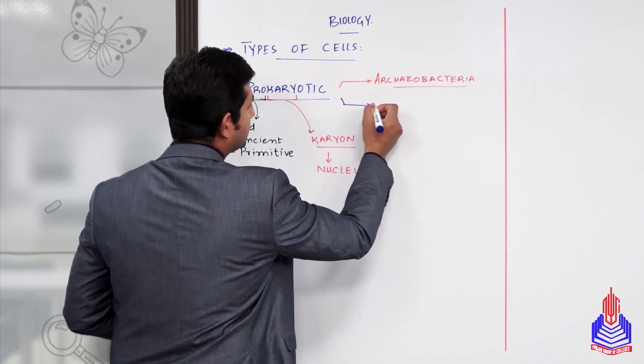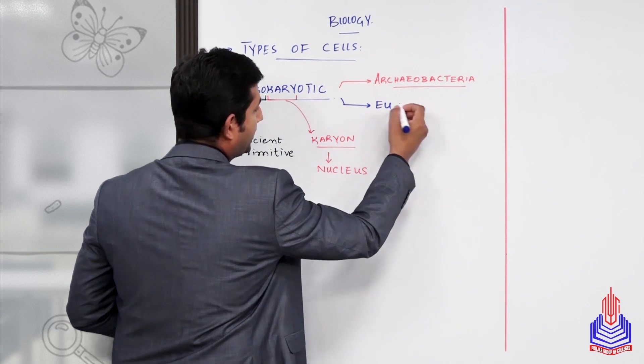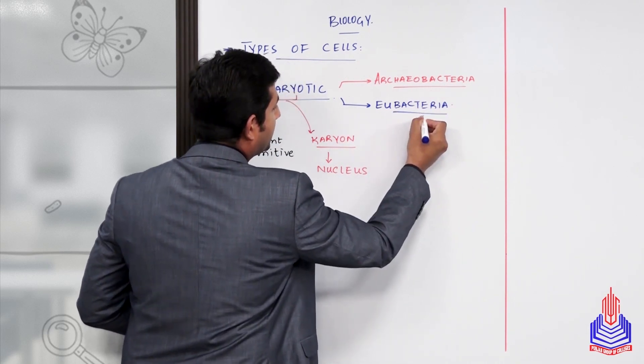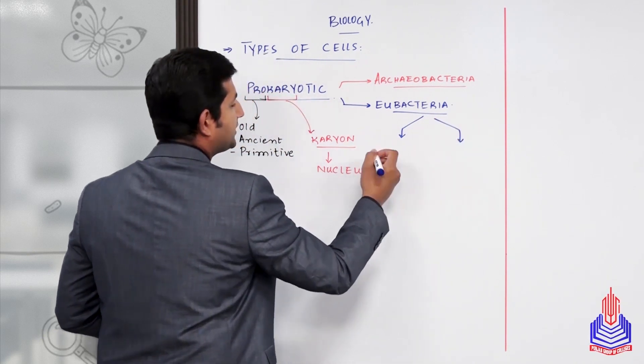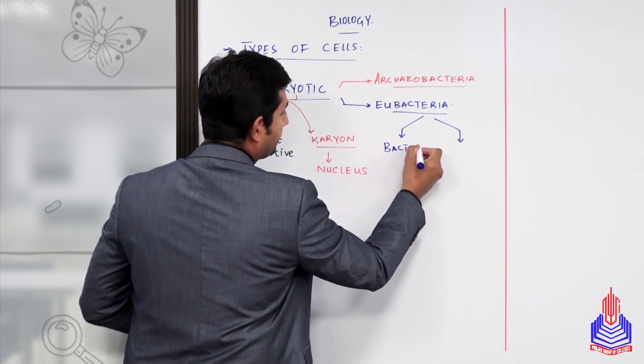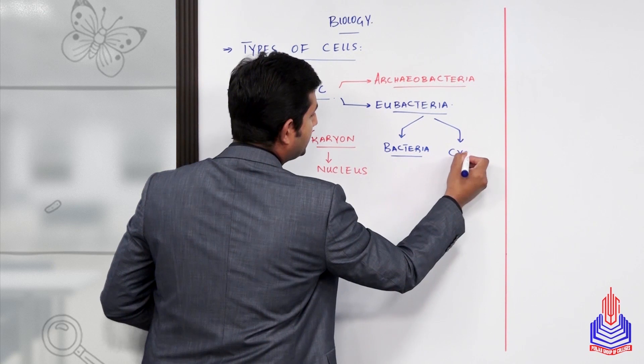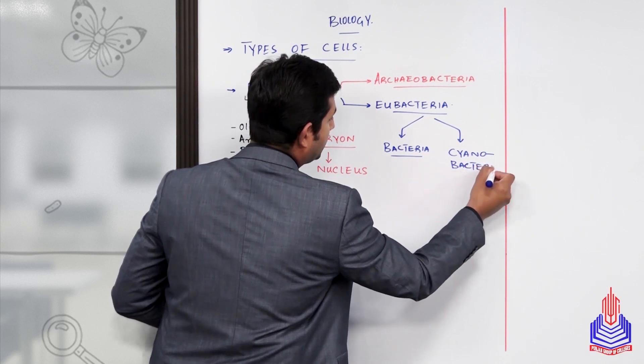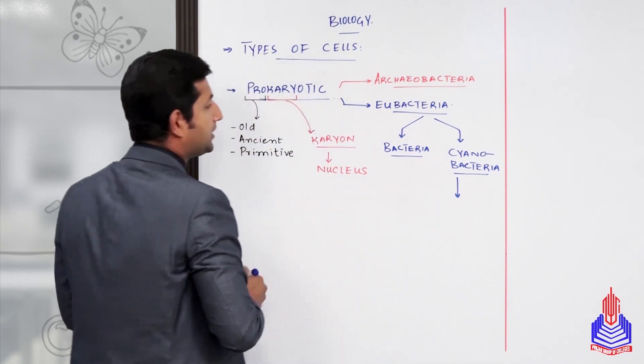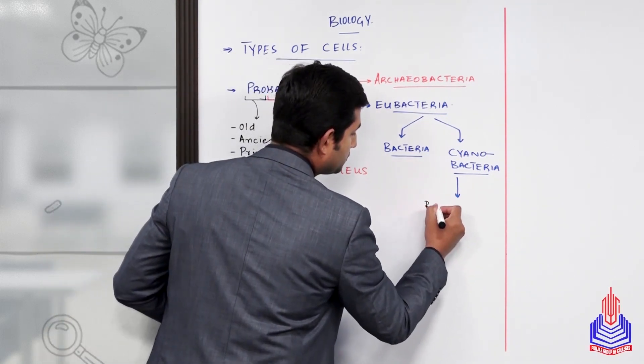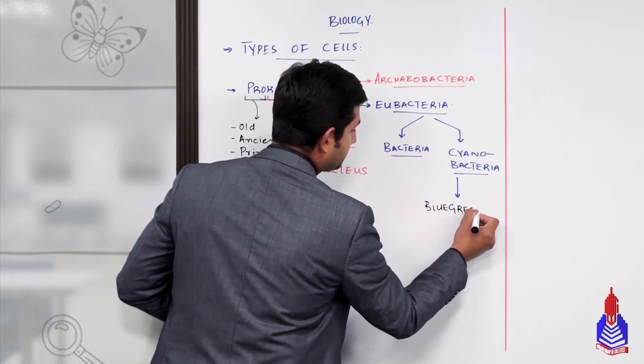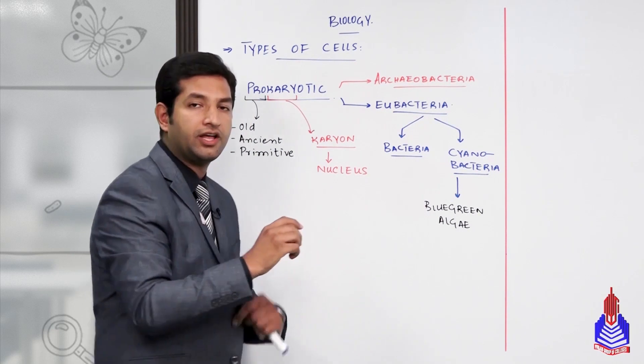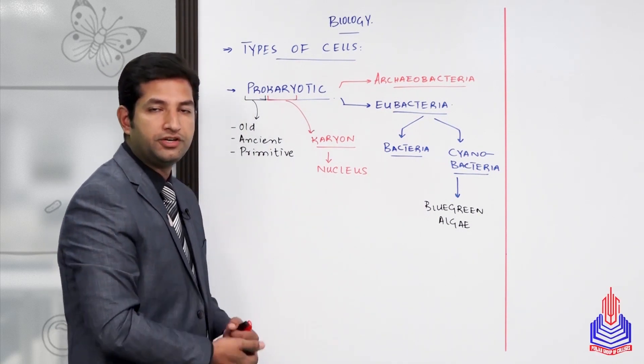The second type is eubacteria. Eubacteria are further differentiated into two groups: one we generally call bacteria, and the other are cyanobacteria. Due to their photosynthetic ability, cyanobacteria are also called blue-green algae. This is a brief introduction to prokaryotic cell types and their divisions.